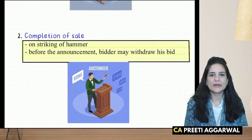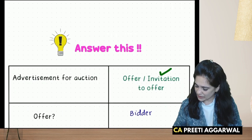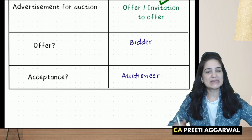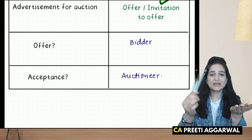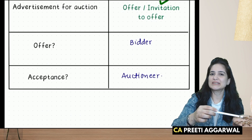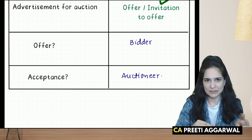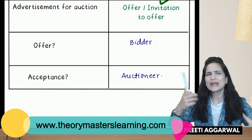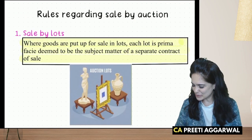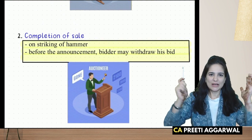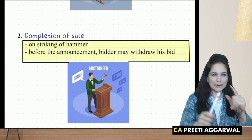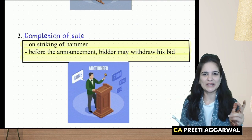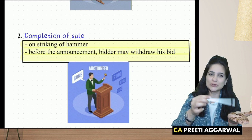Completion of sale: a sale is completed on the fall of the hammer. The bidder makes an offer, and the auctioneer accepts it by striking the hammer — his action itself communicates acceptance without words. Sometimes auctioneers also use dramatic words like 'going, going, gone' or 'one, two, three — yes, sold to number so-and-so,' but actually the sale takes place on the fall of the hammer.